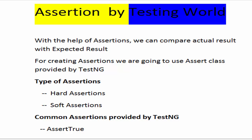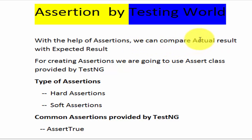Welcome to the testing world. In this session we are going to understand assertions. With the help of assertions we can compare actual result with expected result. Taking the example of manual testing: when we are running any test case, at the end or maybe in the middle of the test case, we are comparing actual result with expected result. If actual result is equal to expected result it is passed; if they are not matching, it is failed. That kind of comparison can be done in Selenium by using assertions.